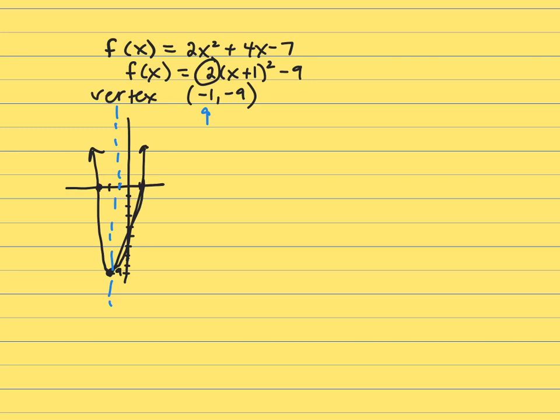And then the next thing is find the x-intercepts. Well the x-intercepts are where y equals 0. So I think I'll use this form here. So to find your x-intercept let y be 0. So it's going to be 0 equals 2x squared plus 4x minus 7. And I don't know if that will factor or not. So I'm just going to use a quadratic formula.